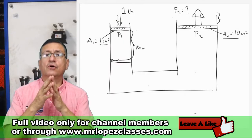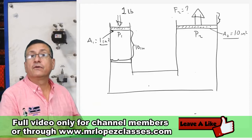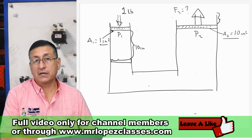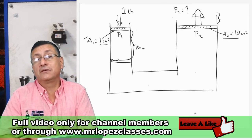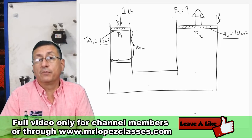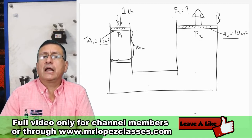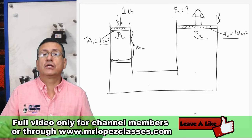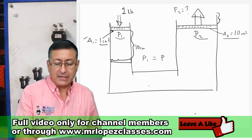Suppose you have a closed container with two cylinders. On the left side is a cylinder with a small diameter — the piston area is one square inch. On the right side is a cylinder with a bigger diameter — the piston area is 10 square inches. The fluid inside is hydraulic fluid, and the pressure is constant, meaning pressure one equals pressure two.